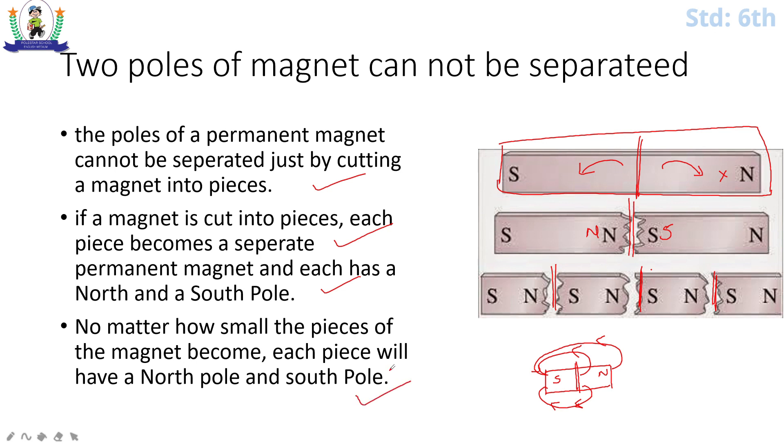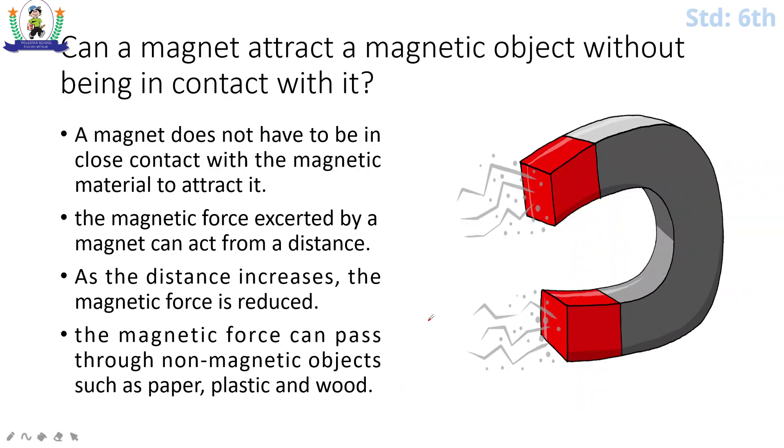Next, can a magnet attract a magnetic object without being in contact with it? Can you place a magnet somewhere and it attracts another object without contact? Yes. Suppose an iron piece or a pin clip is there. You just take the magnet near it, then what will happen? It will be stuck by the magnet.